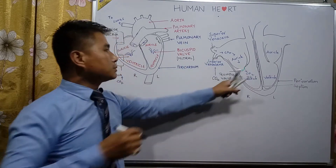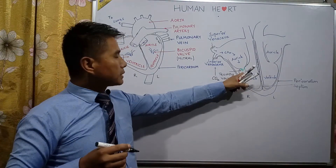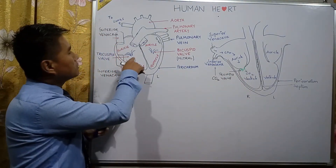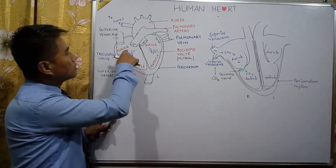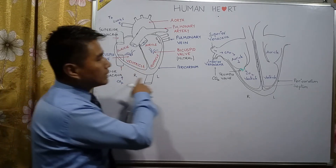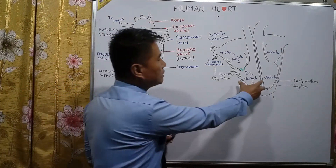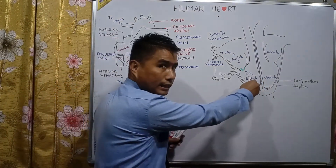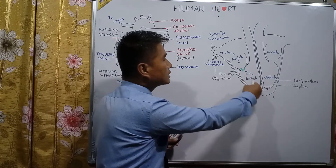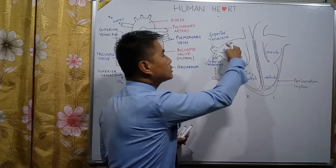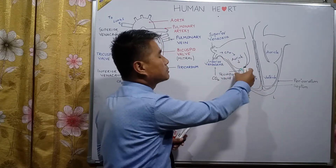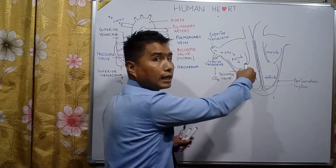The tricuspid valve is present between the auricle and the ventricle of the right-hand side of the heart. When the right ventricle contracts, blood tries to flow back to the auricle, but the tricuspid valve closes.